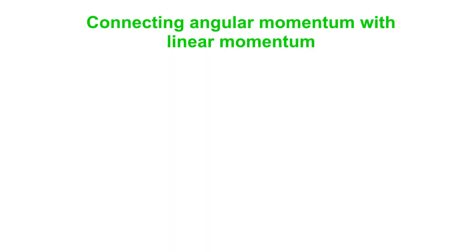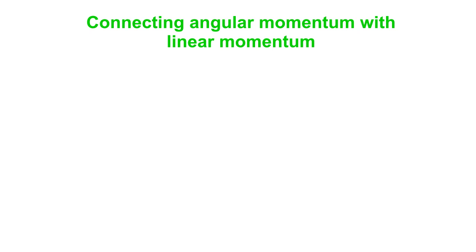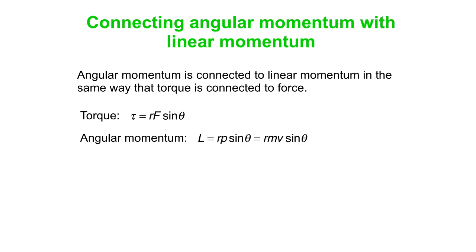Let's connect angular momentum with linear momentum. Angular momentum is connected to linear momentum in the same way that torque is connected to force. Our torque equation is torque equals r times F times sine theta. Our angular momentum equation, in addition to L equals I-omega, is L equals r times p times sine theta, or L equals r times m times v times sine theta.